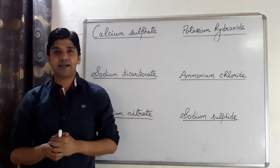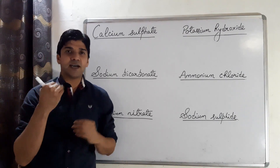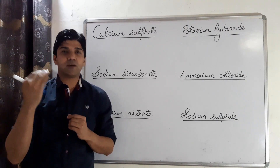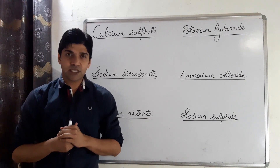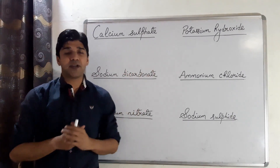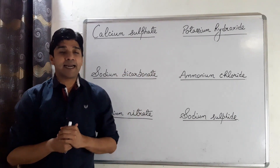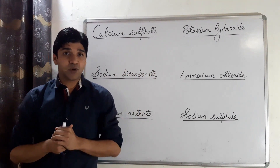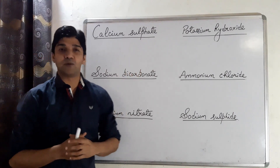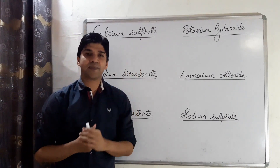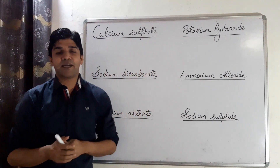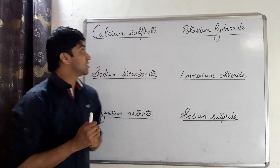We covered ions — monatomic and polyatomic ions — and how to write the chemical formula of a compound. At the end of the lecture, I asked you to write the chemical formulas of some compounds. So let's recheck those now.